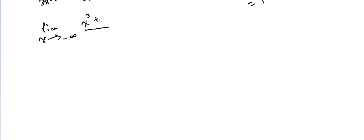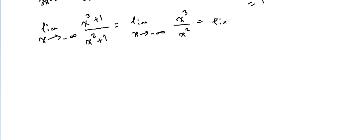Let's do another one. Limits as x approaches infinity are simpler. We have: limit of (x³ + 1) over (x² + 1) as x approaches negative infinity. Since we have infinity, we just take the highest exponent over the highest exponent. The highest exponent is x³ over x², which leaves x. So the limit of x as x approaches minus infinity is minus infinity.